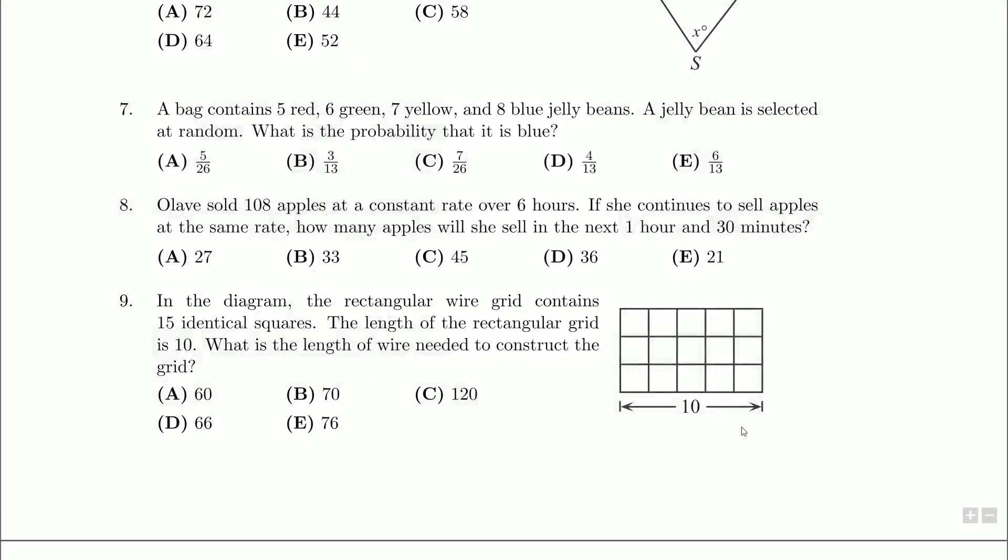So what have we got for question number eight? Olav... Usually I have a good stab at pronouncing these things. If somebody knows, I'm going to say Olav, sort of like Olaf but with a harder sound at the end. Olav sold 108 apples at a constant rate over six hours.